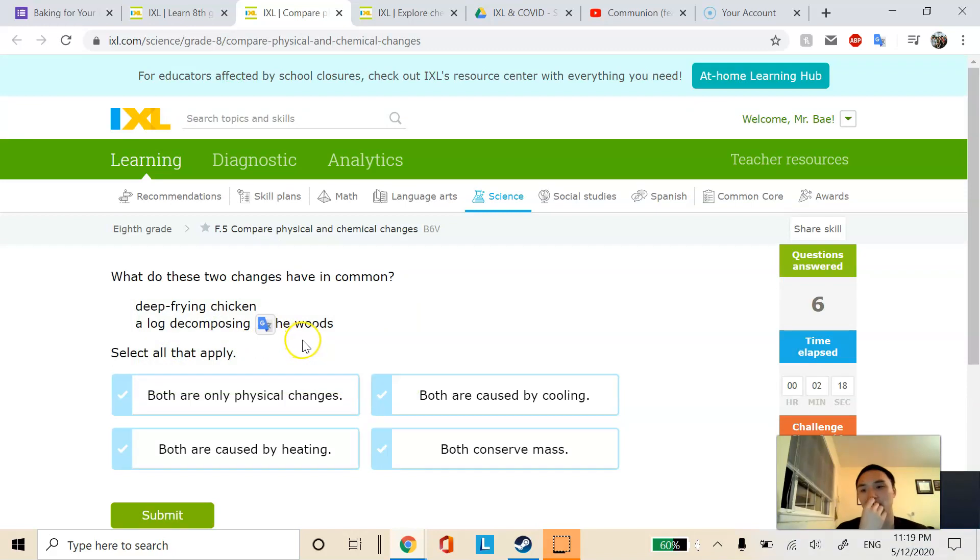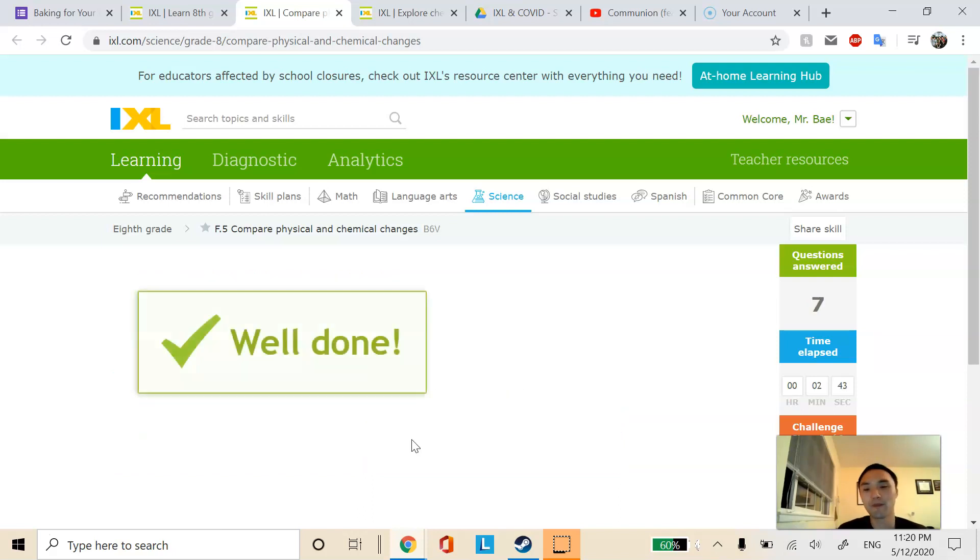Next one here. Deep frying chicken and a log decomposing in the woods. Both of these are chemical changes. And I don't see that option of both are chemical changes. So are both caused by heating or cooling? The frying the chicken is definitely heating, but then the decomposing is debatable. So I would just pick both conserved mass, because that's always the answer. That's always right no matter what.